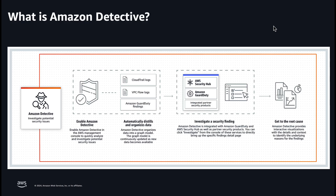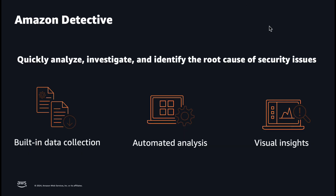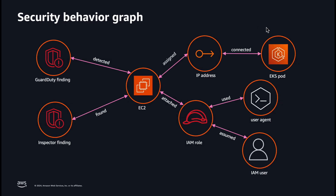Amazon Detective empowers security teams to investigate and determine the root cause of security findings and suspicious activities. Amazon Detective Investigations use machine learning models and threat intelligence to automatically analyze resources in your AWS environment to identify potential security incidents. It lets you proactively, effectively, and efficiently use automation built on top of Detective's behavioral graph to improve security operations.